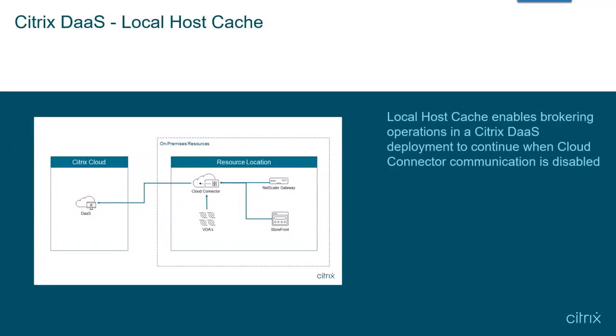Local Host Cache, or LHC for short, is a high-availability solution designed to mitigate end-user launch impact issues when Citrix Cloud Connectors are unable to communicate with Citrix Cloud. It enables brokering operations to continue for whatever reason — be it outages, connection issues, internet blackouts, and so forth. Think of LHC as an insurance policy against productivity loss for your Citrix DAS solution.